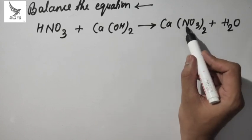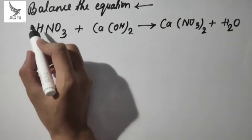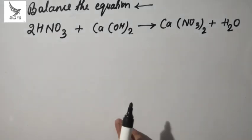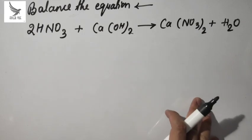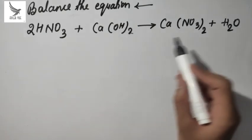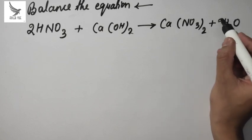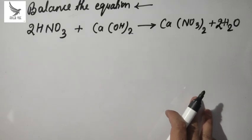If we talk about nitrogen atoms, on the right hand side there are 2 and here is 1. So to balance nitrogen, we will place a coefficient here. When nitrogen and calcium are balanced, now we will see the number of oxygen atoms and hydrogen atoms. This side has oxygen atoms: 6 plus 2, that is 8. Here 3 times 2 is 6, and to balance oxygen we will place it here. So this is a balanced chemical equation.